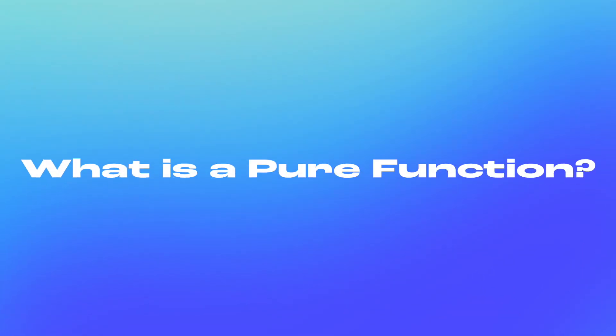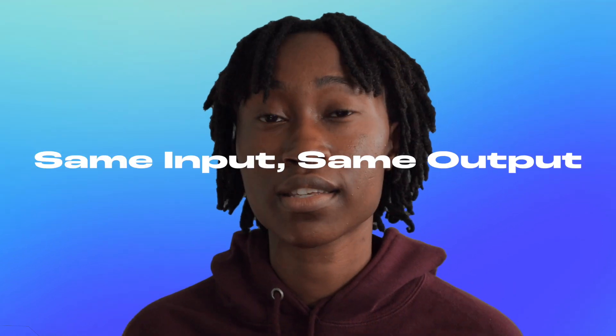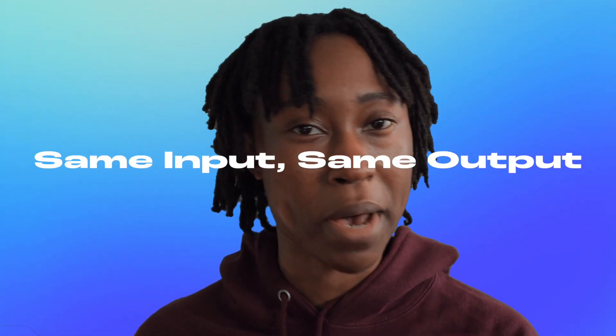A function in JavaScript that's considered to be a pure function has to have the following two properties. The first is that the function, given the same input, will always return the same output. The second property is that the function doesn't produce any side effects. We'll take a closer look at side effects later, but first let's look at the first property — given the same input, you should always get the same output.